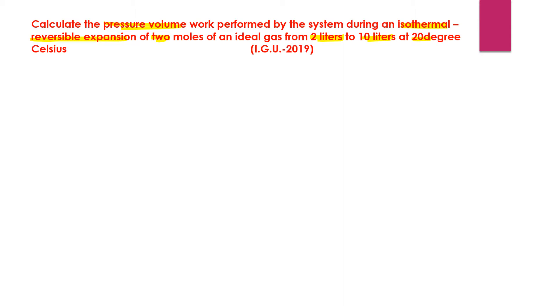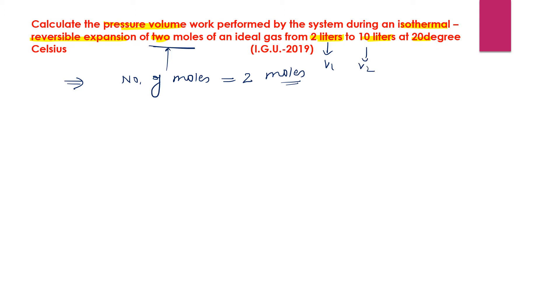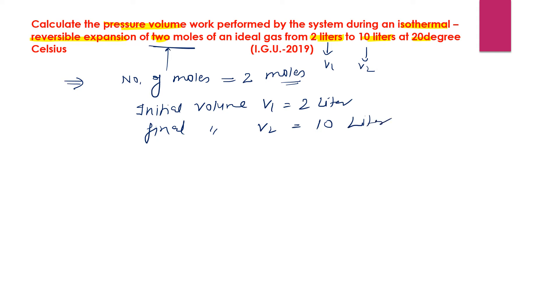Let's identify the given values. First, number of moles is two — n = 2 moles. Second, the volume changes: initial volume V1 = 2 liters, and final volume V2 = 10 liters.